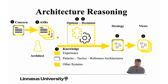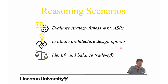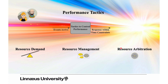Once they have the requirements, the architects need to design for them — they have to look up options and make decisions. Part of the process is architectural reasoning: they look up their knowledge base, rank options, remove infeasible ones, and eventually come up with decisions, managing trade-offs. The three reasoning scenarios we discussed before are strategy fitness, comparative evaluation of design options, and reasoning about trade-off direction.